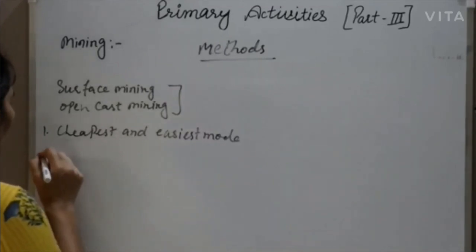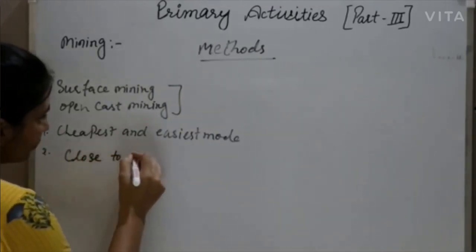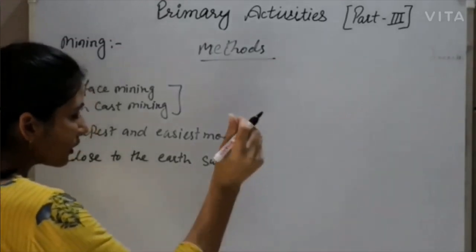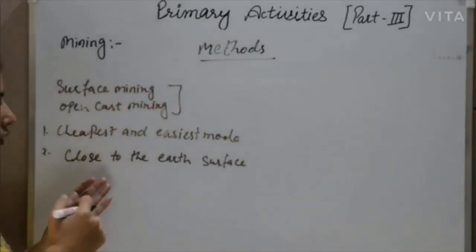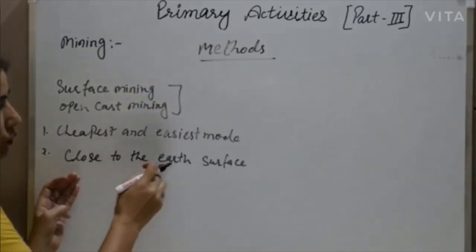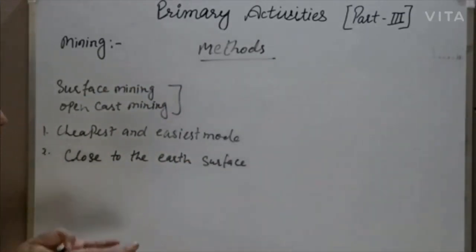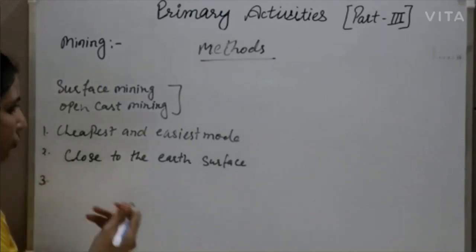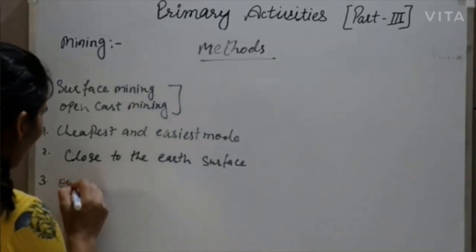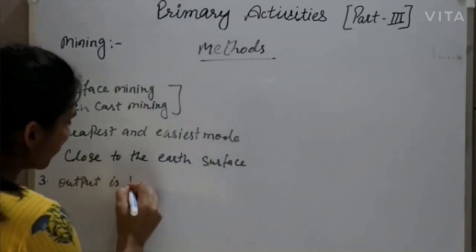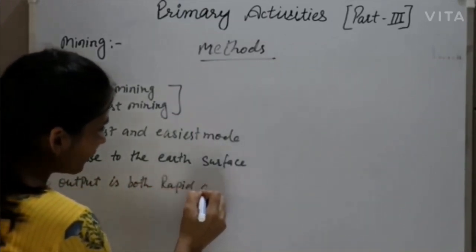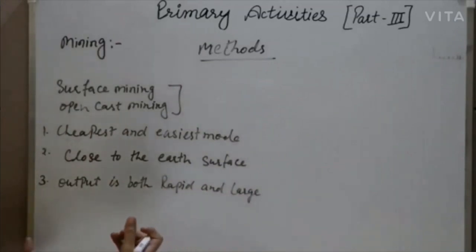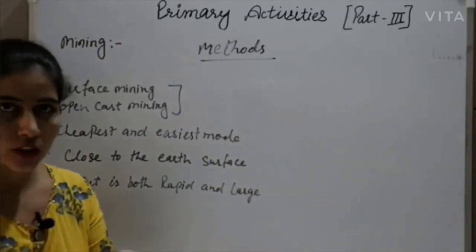The features of surface mining are: first, it is the cheapest and easiest mode, because when metals and minerals are available on the surface, we don't need more capital investment and no shaft or tunnel is required. Second, metals and minerals occur close to the earth's surface. Third, output is both rapid and large.